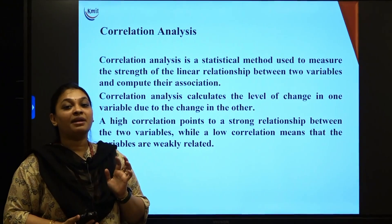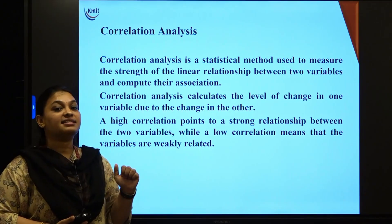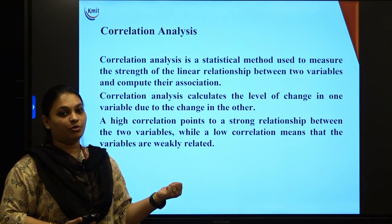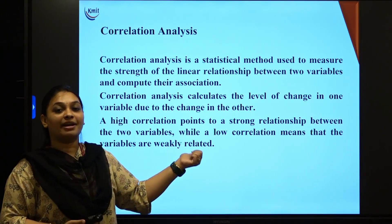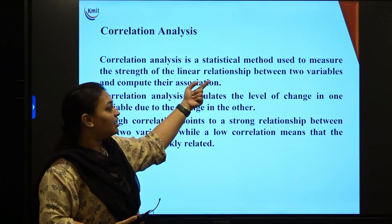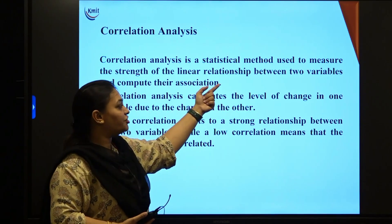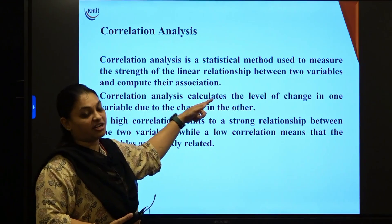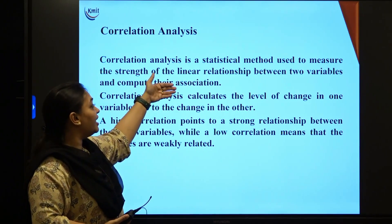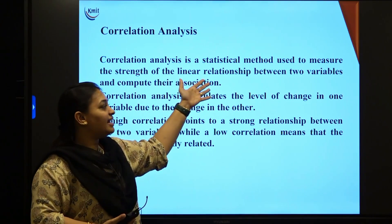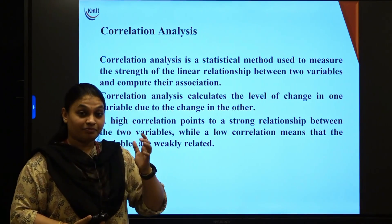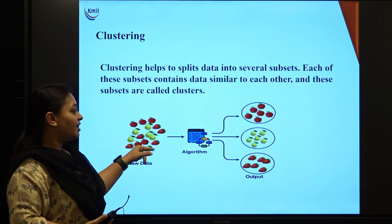Next comes correlation analysis. Correlation analysis uses mathematical methods — basically concepts like regression. Correlation analysis is a statistical method used to measure the strength of the linear relationship between two variables and compute their association. We use this statistical method to know the linear relationship between two different variables and their association.